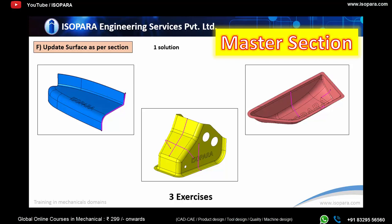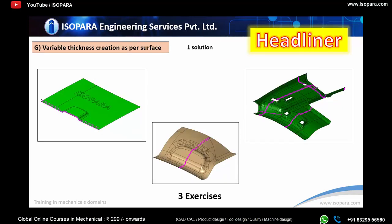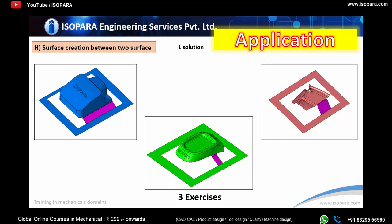The seventh module covers designing parts where the thickness is not uniform — it varies within a single part. You have to follow that variable thickness as per the master section provided. This kind of work is generally done in headliners or overhead systems, and practicing this will lead you to an advanced level in surfacing.